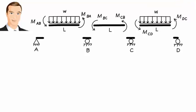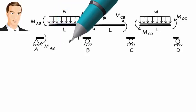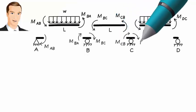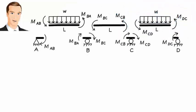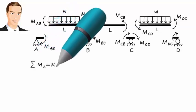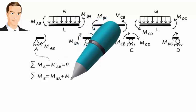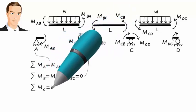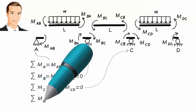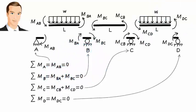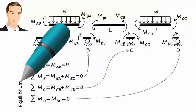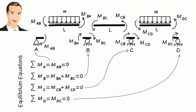These member end moments also appear at the joints. Since each joint must be in equilibrium, we can write the equilibrium equations. These are our equilibrium equations to be solved for the unknown slopes.